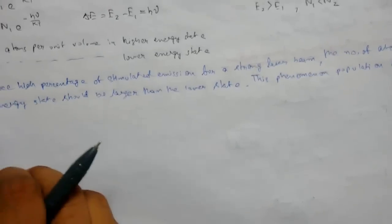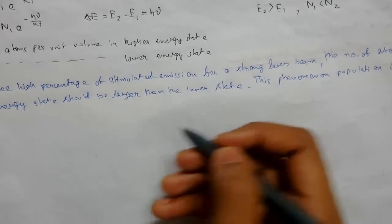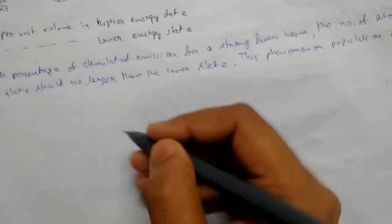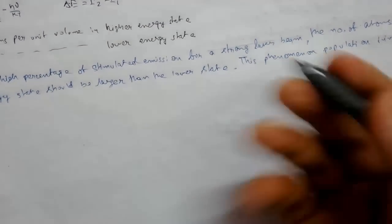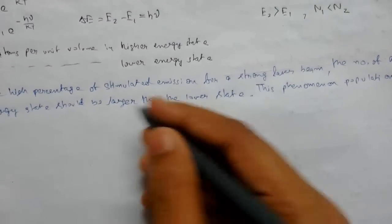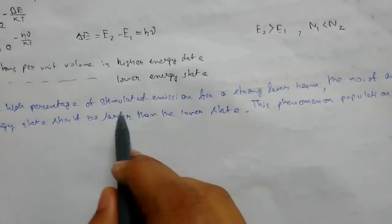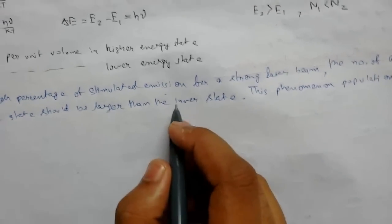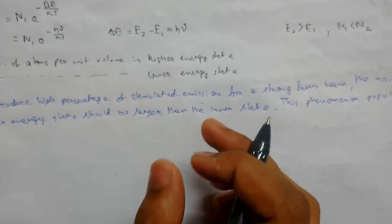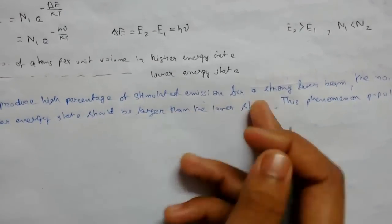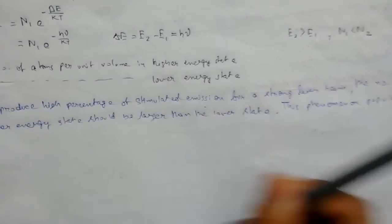When population inversion is achieved, the emitted photons interact with atoms and multiply, yielding large numbers of photons by repeated stimulated emission. Hence, a strong coherent beam—a laser—is obtained.